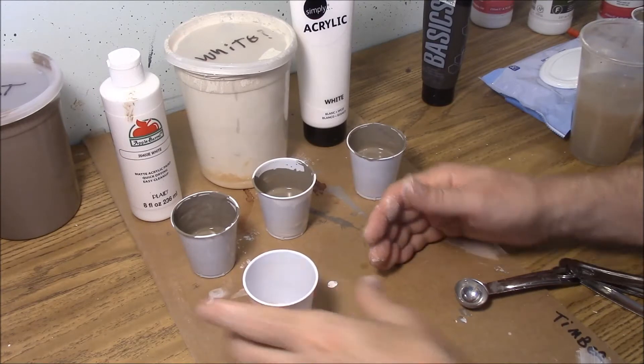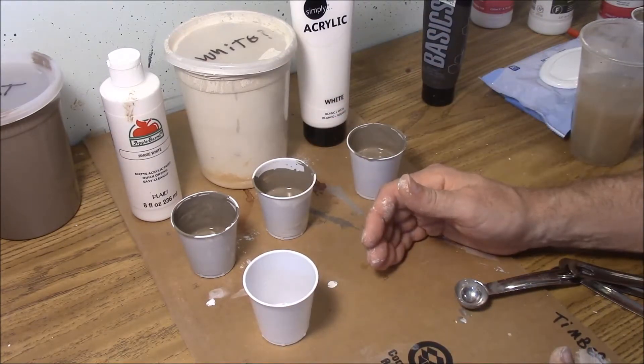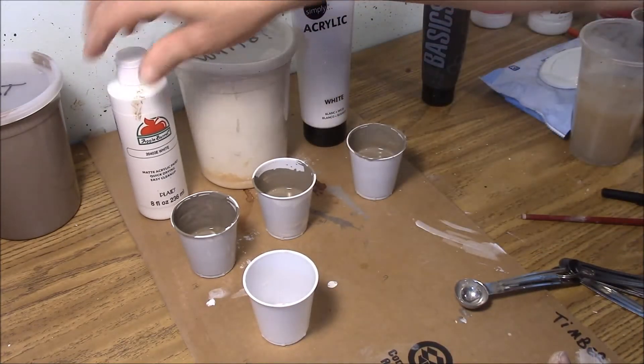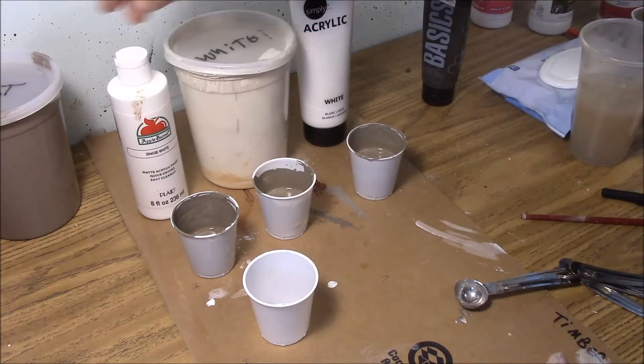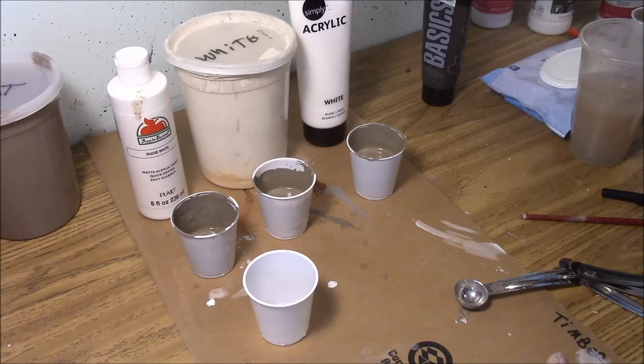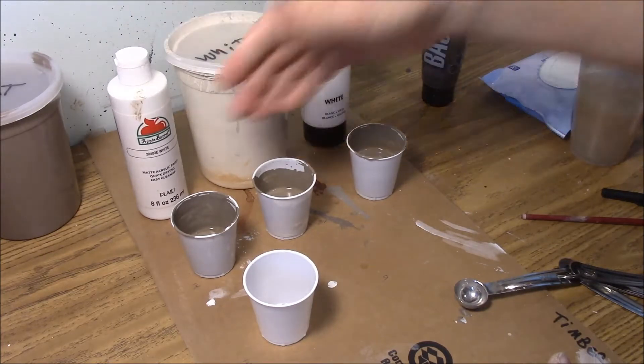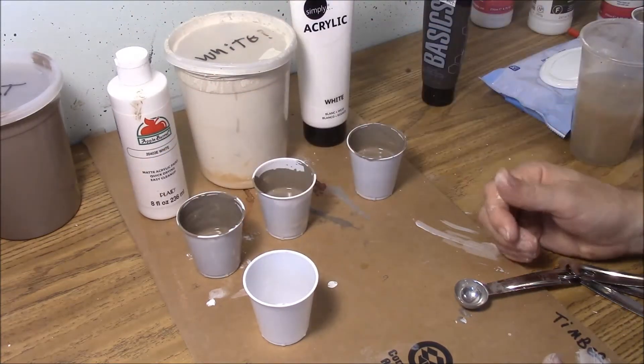To dry brush the dirt on the tiles, we need a lighter version of the dirt color, which means we're going to have to add white to the dirt color. Because these different kinds of white are different thicknesses, we're going to have different amounts of white added to the dirt to make the lighter color.